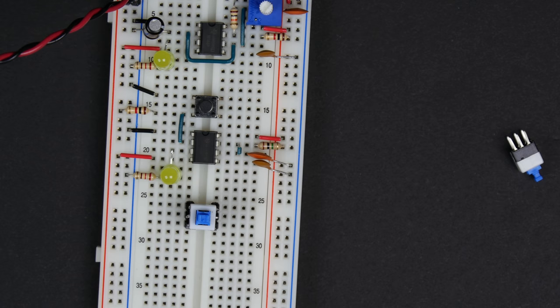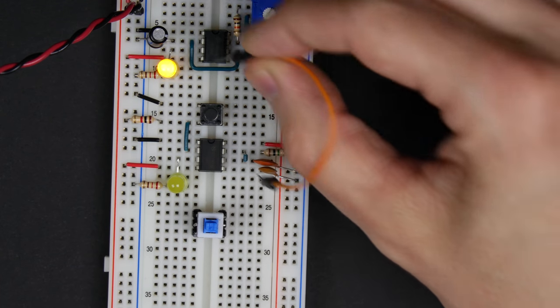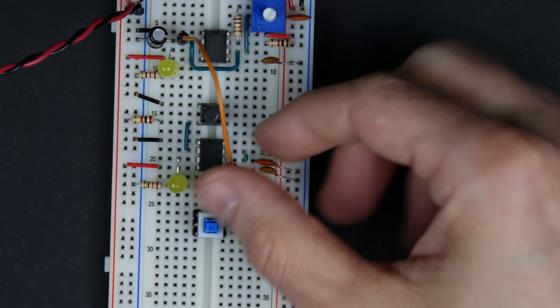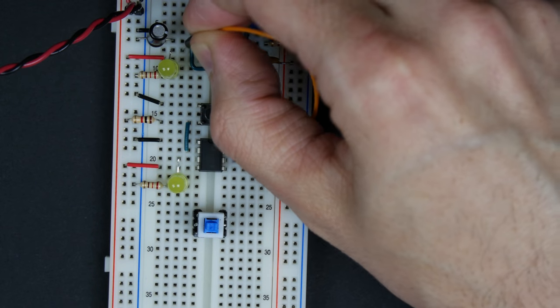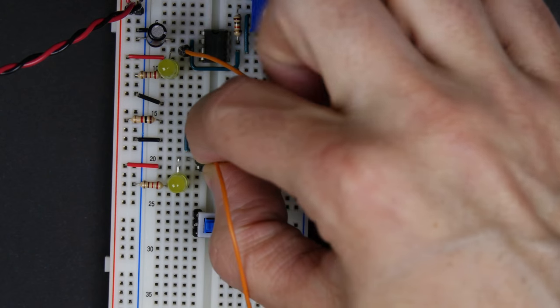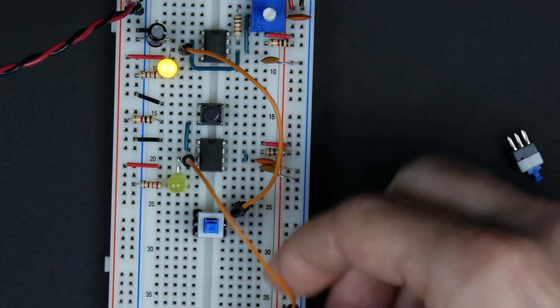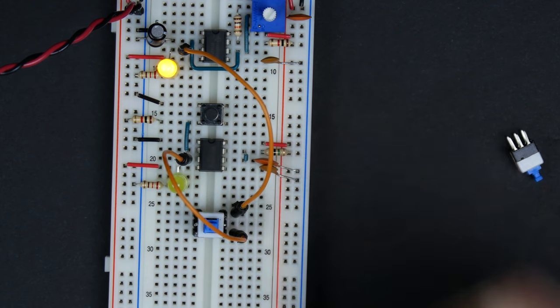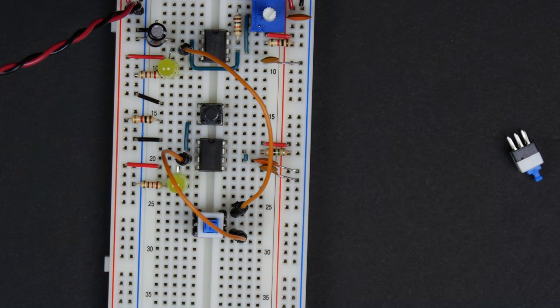And so one thing we could do is we could just connect the output of this here. Well, that's not the output. Let's connect the output of that to one side of the switch, and we could connect the output of our manual trigger over here to the other side of the switch.